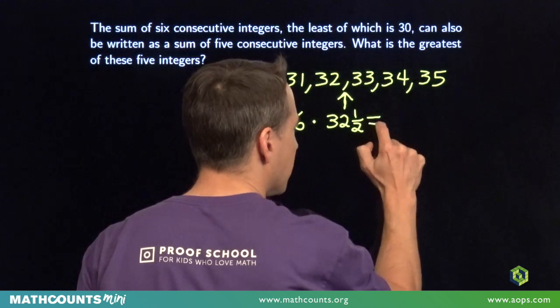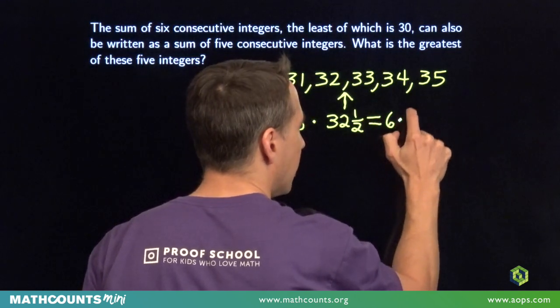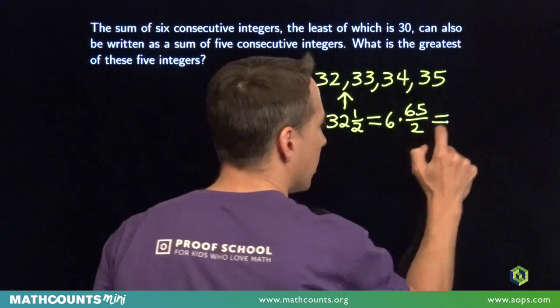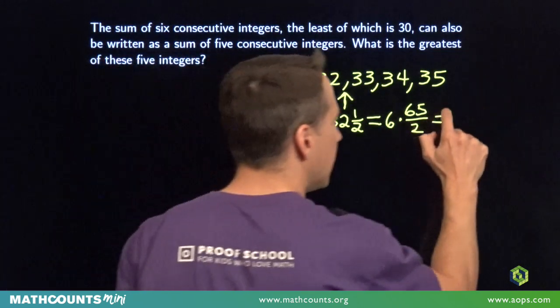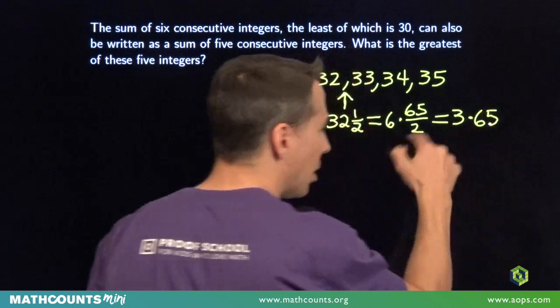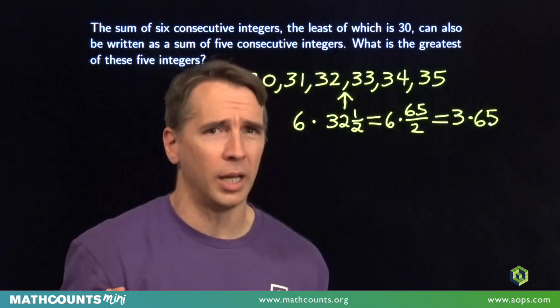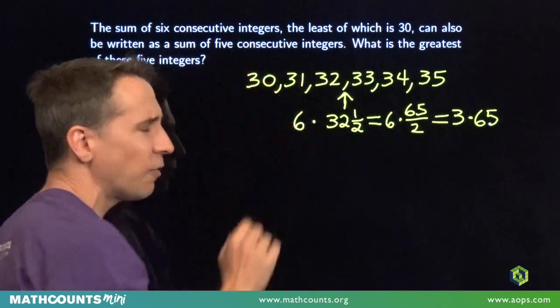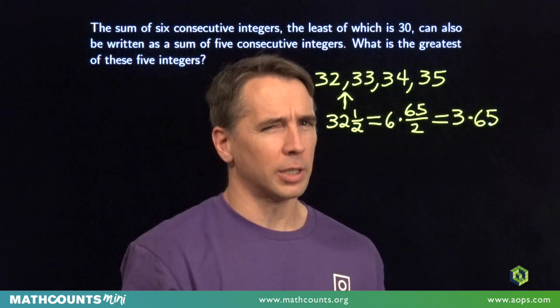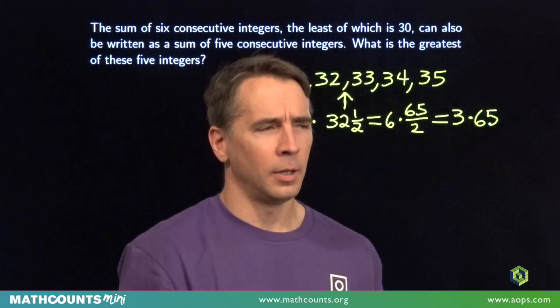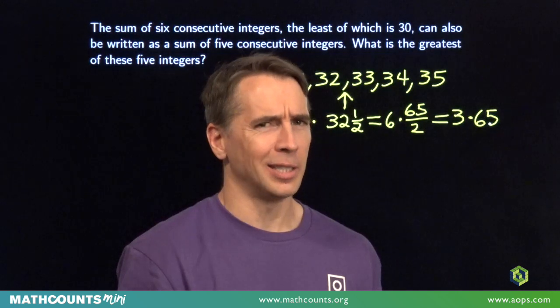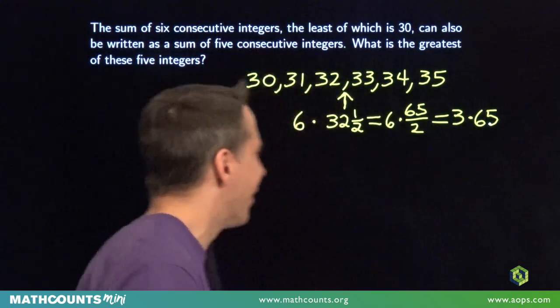Six times 32 and a half. Now, I'm going to write that 32 and a half, 65 over 2. Six divided by 2 is 3. Three times 65 is the sum of these numbers. Now, I could multiply that out, but I still have to think about these five consecutive integers. I don't want to do any work that I don't have to do. Might have learned that strategy from Sam. I suspect he probably learned that strategy from me. All right, here we go.